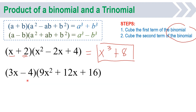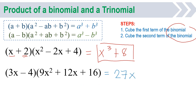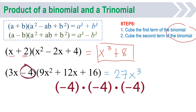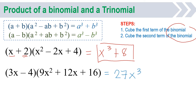So let us proceed with the answer. Just cube the first term, 3x: 3 times 3 times 3 is 27, and x times x times x is x cubed, giving 27x cubed. Then cube the second term, negative 4: negative 4 times negative 4 is 16, times negative 4 gives negative 64. So the answer is 27x cubed minus 64.